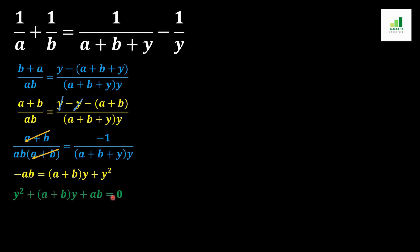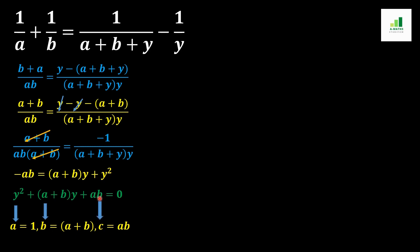We can see that this is a quadratic equation, so we compare it with the standard quadratic equation ax² + bx + c = 0. After comparing, we get: a = 1 (coefficient of y²), b = (a+b) (coefficient of y), and c = ab (the constant term with no variable).